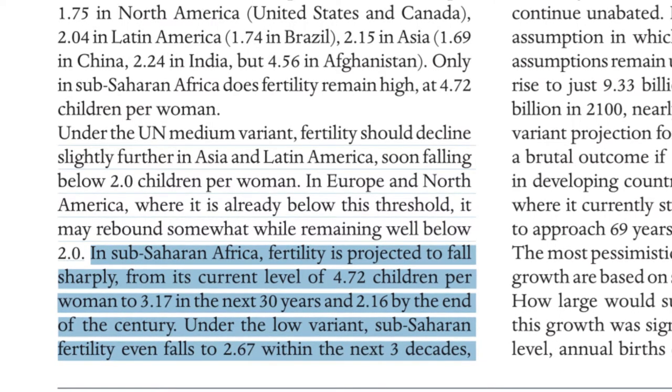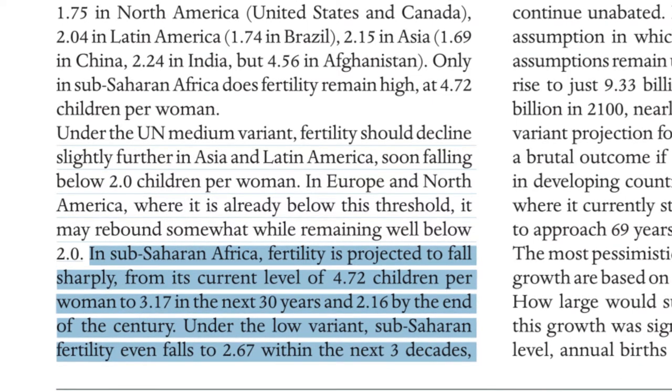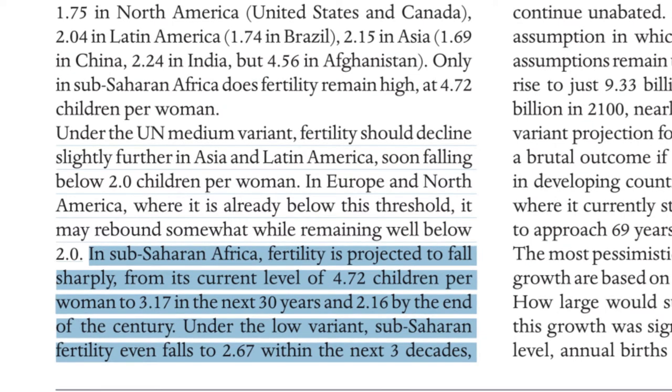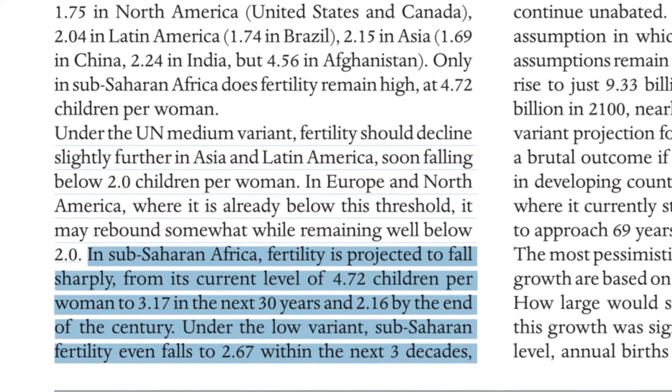Europe and North America will more than likely be around two as well. There's a kind of resistance in human nature where if something's going down, we want it to go up — so there might be a rebellious instinct to have more kids when everyone else is having less. That's being discussed, but for the purposes of this argument we won't factor that in since it hasn't happened yet. Sub-Saharan Africa has two potential outcomes: in 30 years it's likely to fall under three children per woman, then to 2.16 by 2100, according to the United Nations — or the other metric puts it at about 2.67 kids in 30 years.